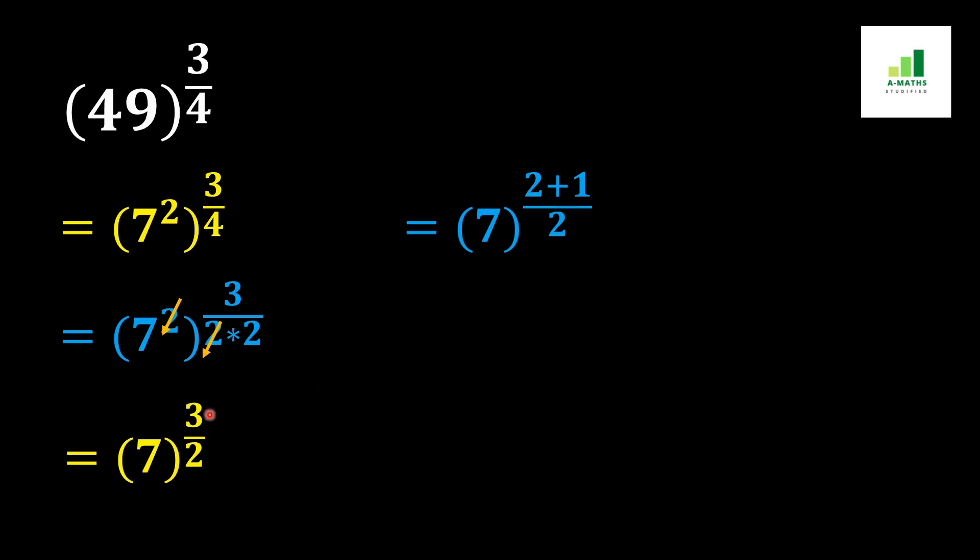Because the sum of 2 plus 1 is equal to 3. Now we can apply this 2 in the denominator on both of these values individually, so we can write 7 to the power 2 plus 1 over 2 as 7 to the power 2 over 2 plus 1 over 2.